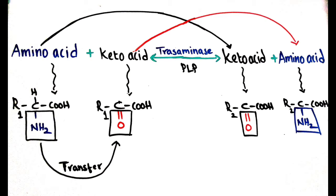Simply, the transfer of amino group happens here but not the release of the amino group. The coenzyme required in this transamination is pyridoxal phosphate. This pyridoxal phosphate helps in the transfer of the amino group from the amino acid to the keto acid, and this is not possible without pyridoxal phosphate.